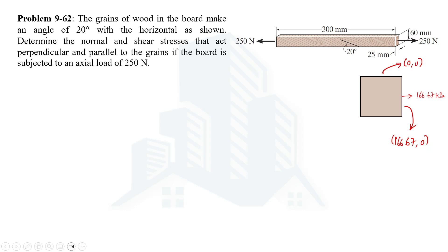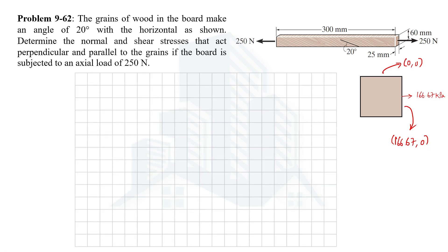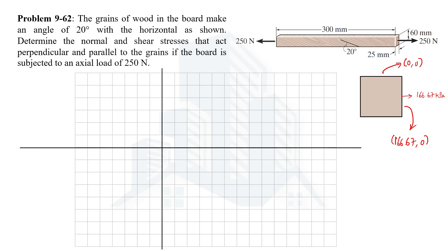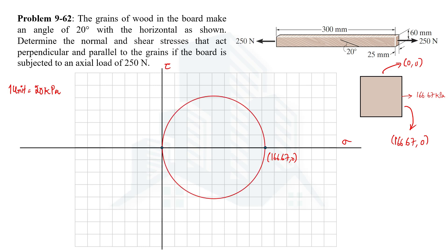Now let's plot these two values on the Mohr's circle. On the grid, the horizontal axis is the normal stress axis and the vertical axis is the shear stress axis. Considering one unit of the grid equal to 20 kPa, the value of 166.67 kPa corresponds to approximately 8 units. This gives us the first point, and the second point is at zero, zero. Once we have the two points, we can draw the Mohr's circle.